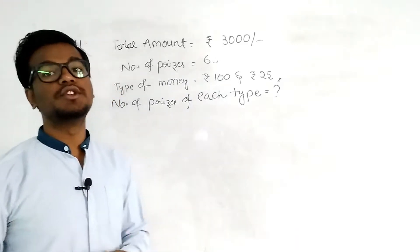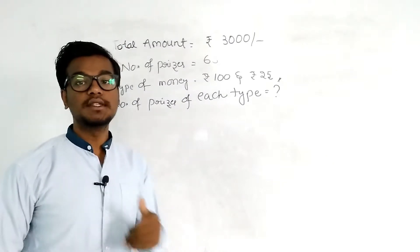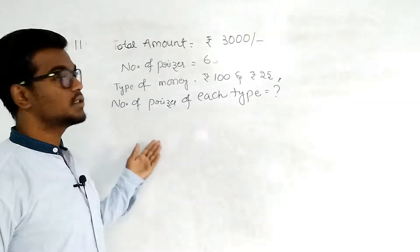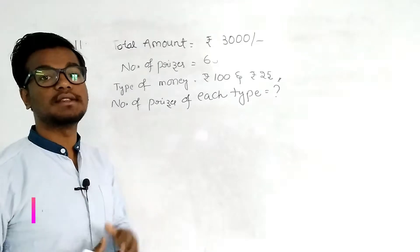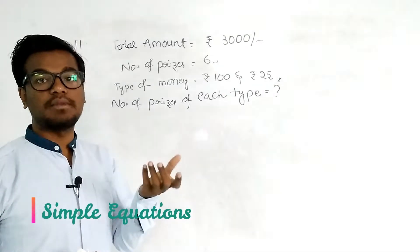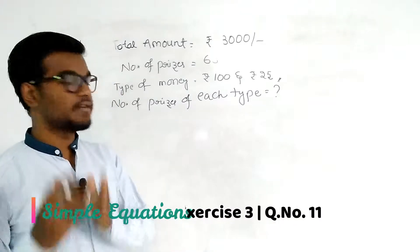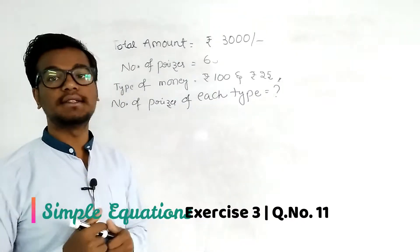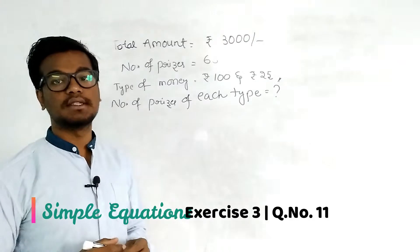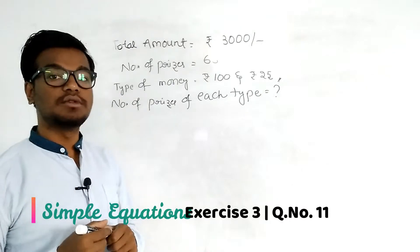Hello viewers, in this module we are going to discuss the solution for the 11th question. The total money given is 3000 rupees, and the total number of prizes is 63. There are 100 rupees prizes and 25 rupees prizes. If you add all the prizes together you get 63, and if you add all the money you get 3000.